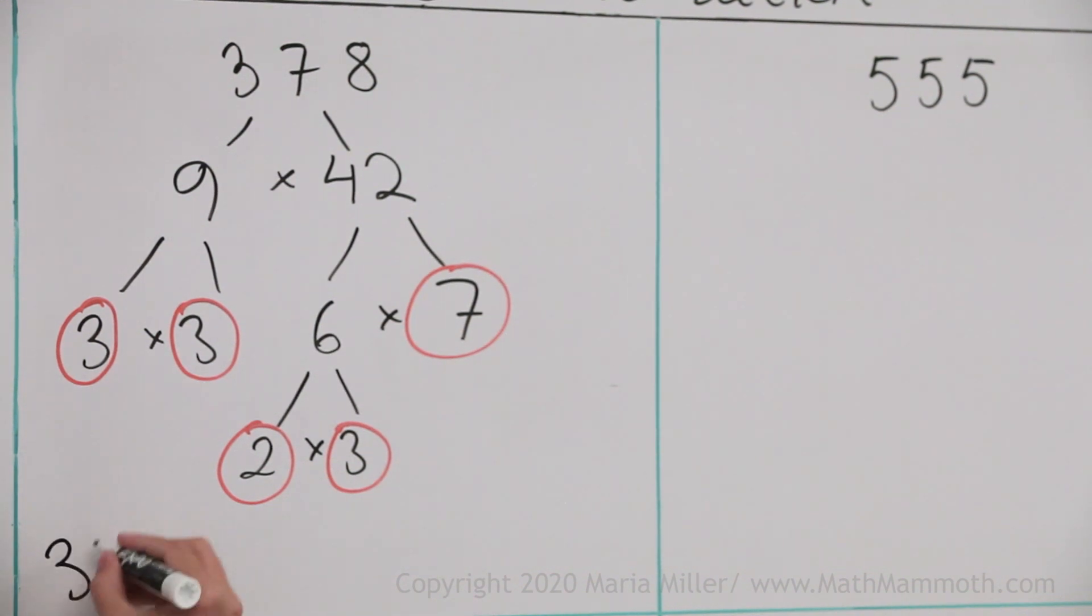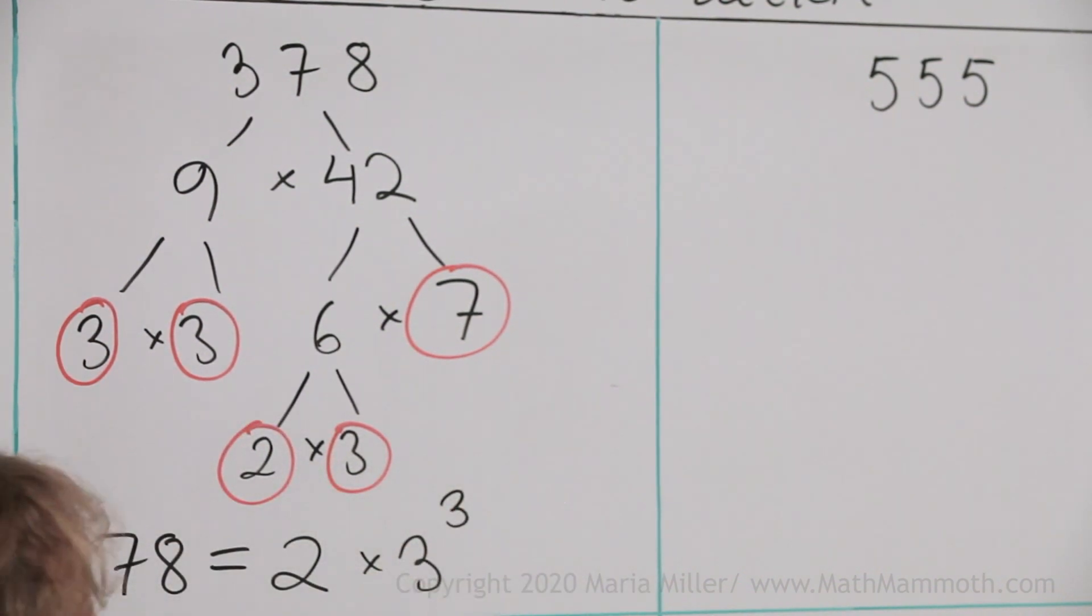So let's write here the prime factorization. Equals, starting with the smallest prime we have here, which is 2. It's only once. But 3 here is now 3 times, so I'll write 3 cubed, 3 to the third power. And lastly we have 7.